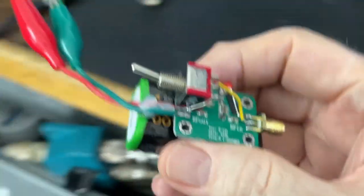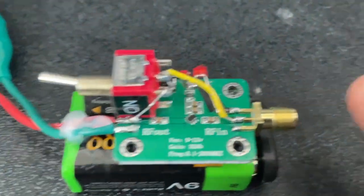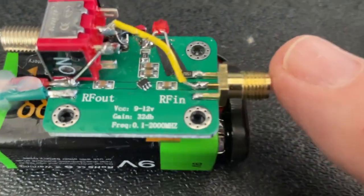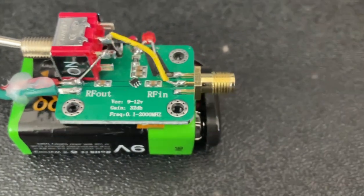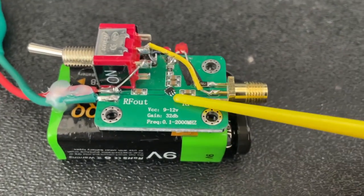So I'm going to hook this up. By the way, it has an input that directly connects to the antenna. You can see it says RF IN.